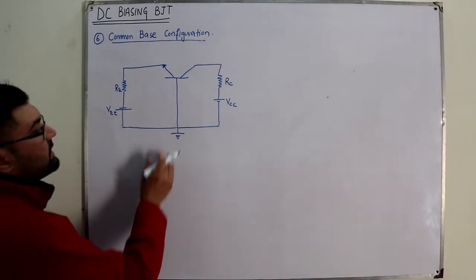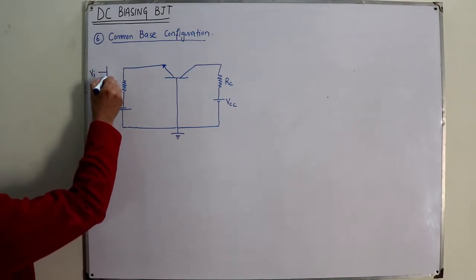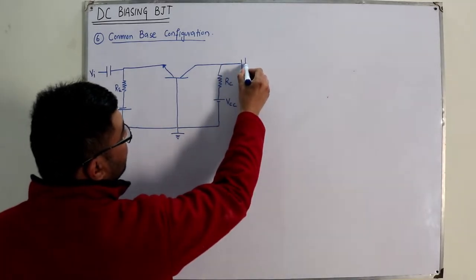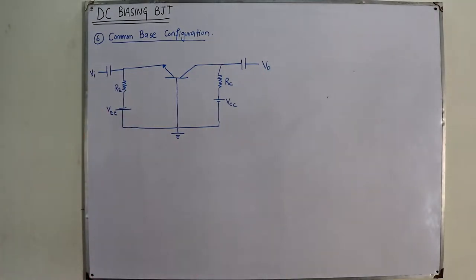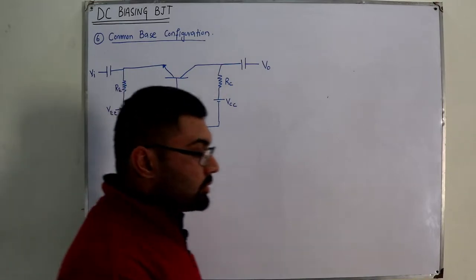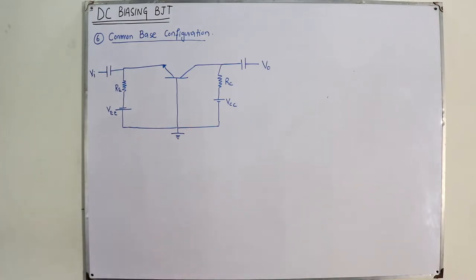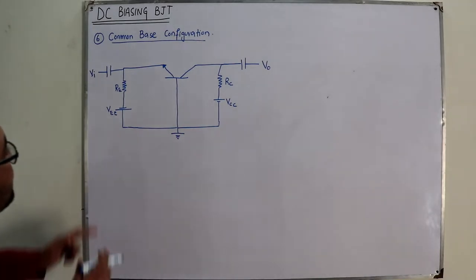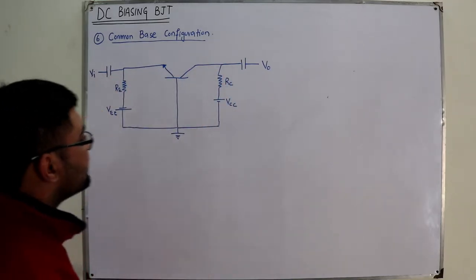The base terminal is grounded. The AC input is applied at the emitter terminal and the AC output is taken from the collector terminal. The output characteristics we discuss will be IC versus VCB - the collector-to-base voltage. For DC analysis, you don't need to deal with capacitors.